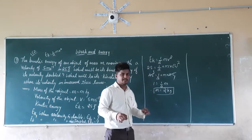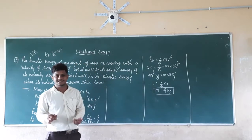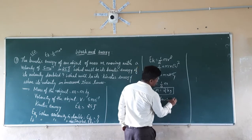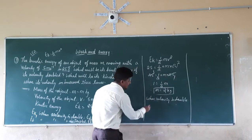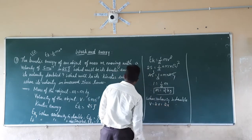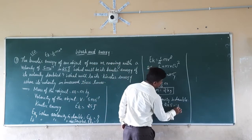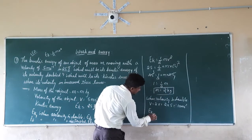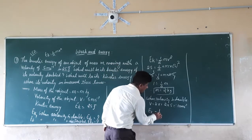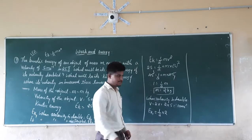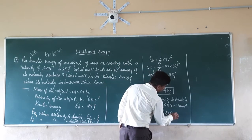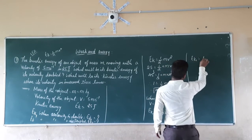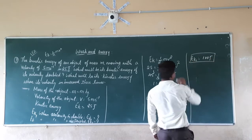Now calculate the kinetic energy when velocity is doubled. When velocity is doubled, v becomes 2v = 2 × 5 = 10 m/s. Therefore EK1 = ½ × 2 × 10² = ½ × 2 × 100 = 100 joules.